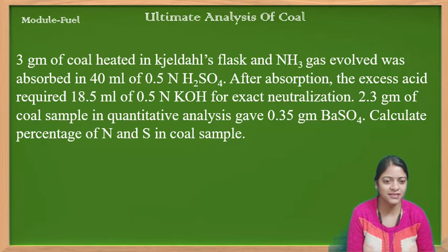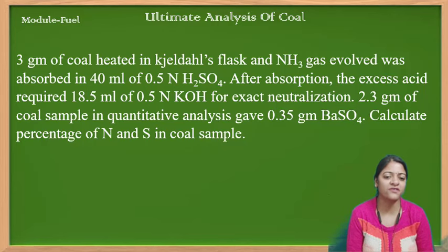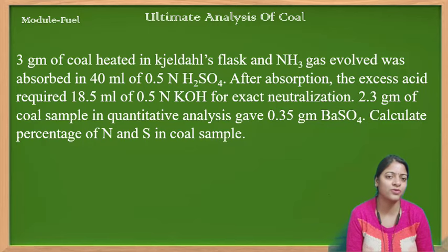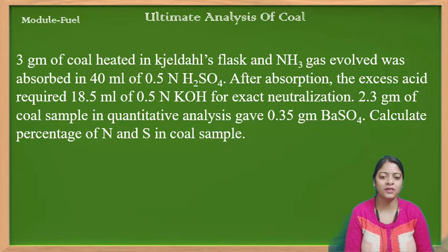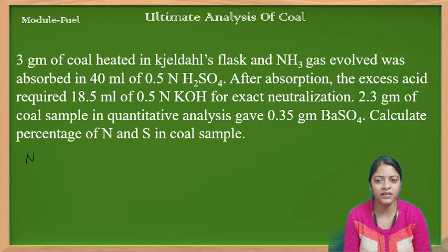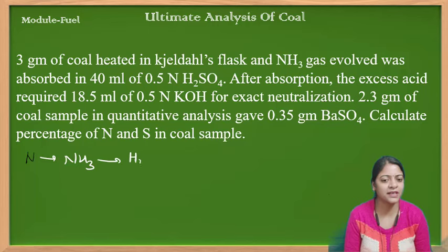अब कितना H2SO4 ammonia के साथ use हुआ, यह मुझे निकालना होगा। इसके लिए हम back titration करते हैं। After absorption, the excess acid required 18.5 ml of 0.5 N KOH। तो यहां neutralization हो रहा है H2SO4 और KOH के बीच। जितना volume H2SO4 का KOH को neutralize करने में लगा होगा, अगर मैं उसको 40 में से minus कर दूँ, तो निकल आएगा कि कितना H2SO4 ammonia के साथ use हुआ।